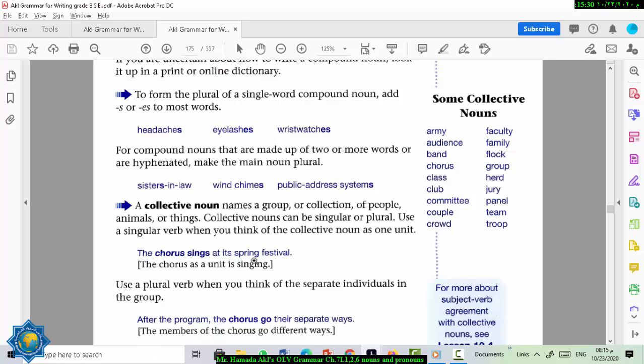It's a singular verb when you think the collective noun acts as one unit, they act together. For example, the chorus sings at its spring festival. In this sentence here, the chorus is a collective noun. They act together as one person. So that's why it takes a singular verb, sings.